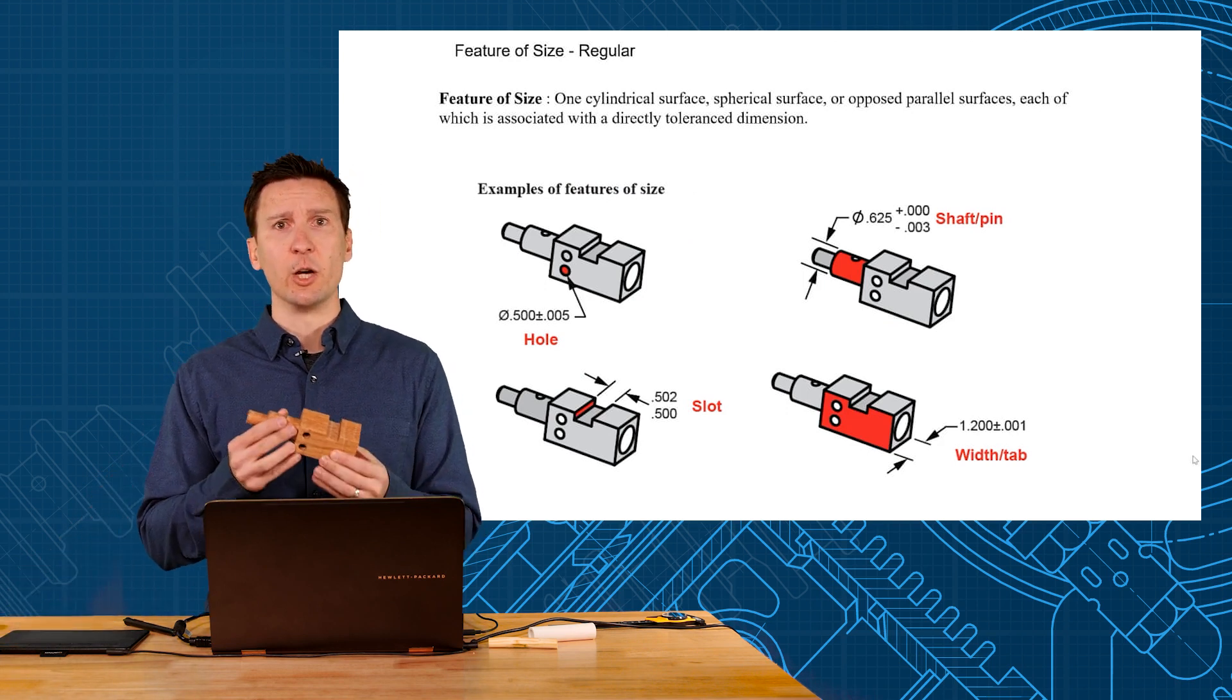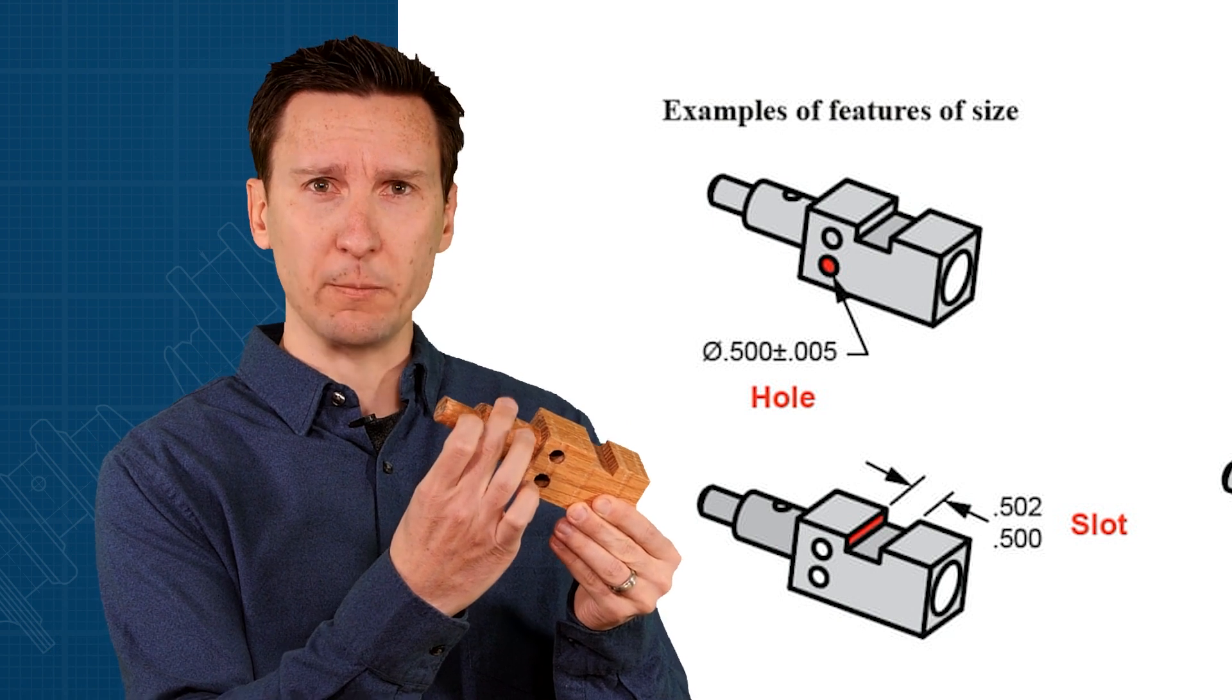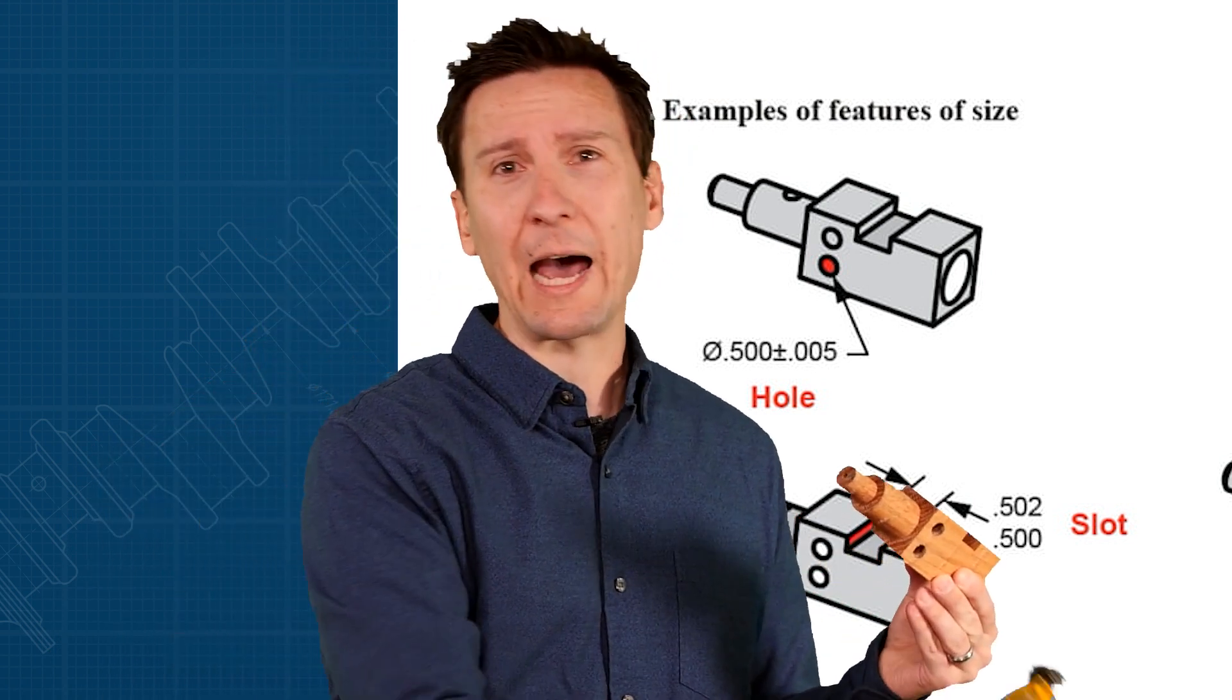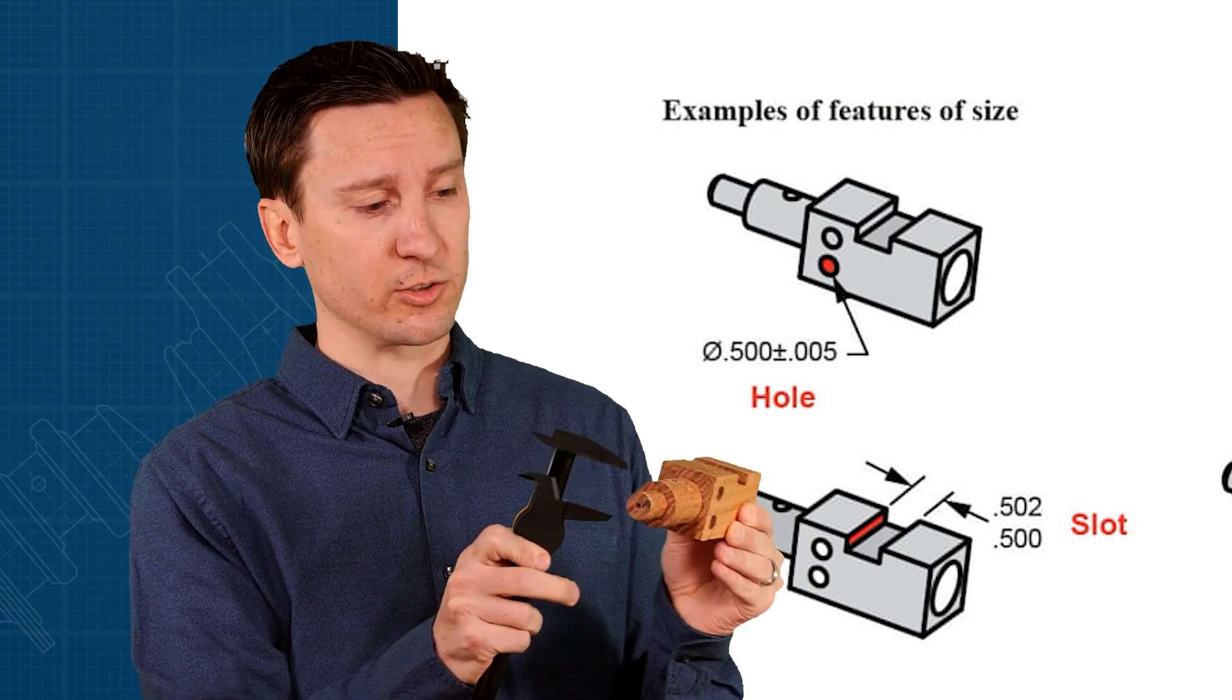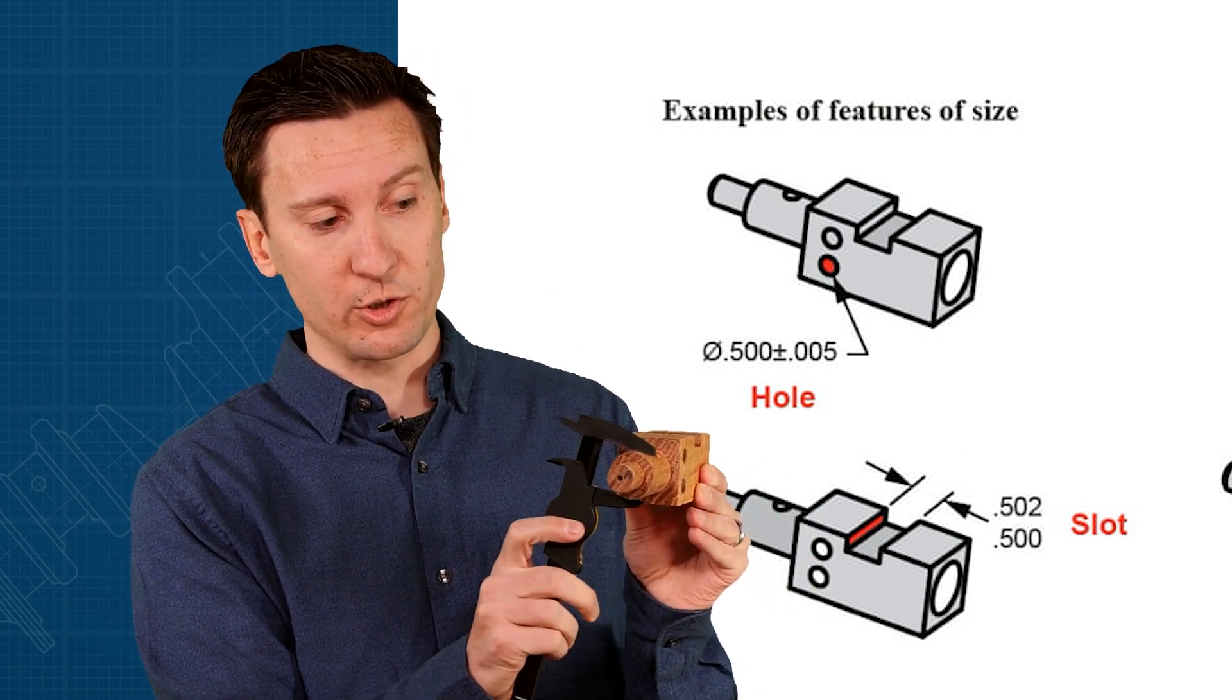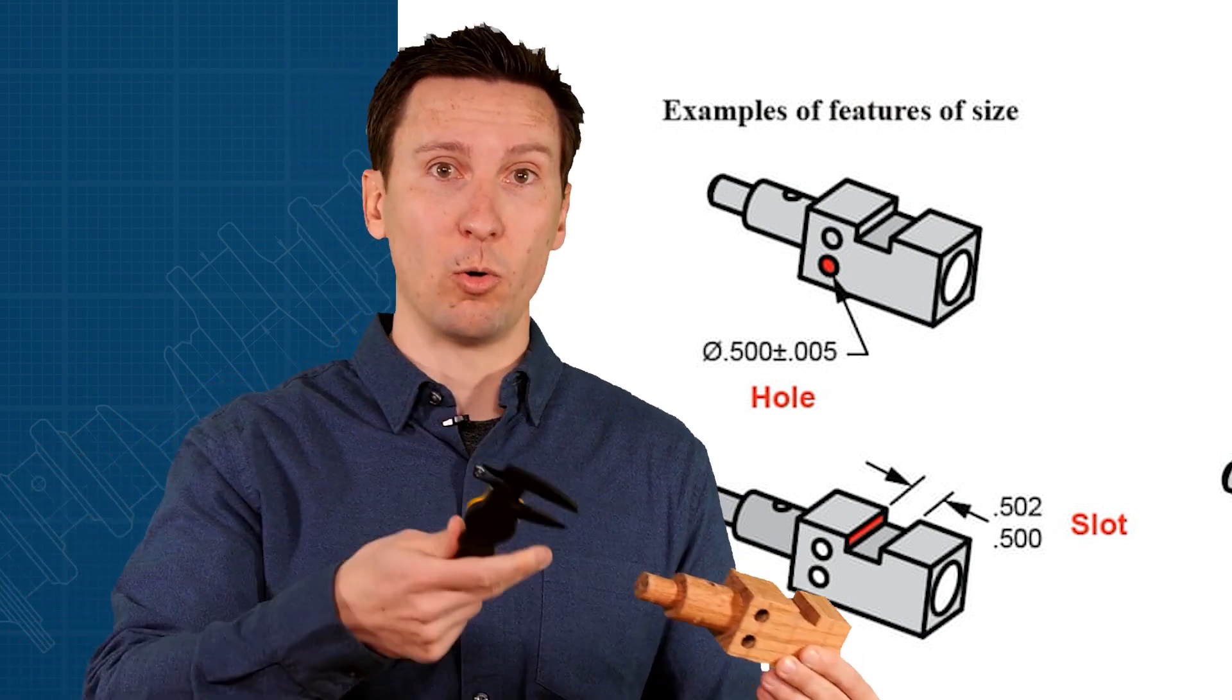What makes a feature have size? We talk about opposing points - some people call it the caliper rule. Can you measure it with calipers? Then it's a feature of size. A shaft has opposing points you can measure with calipers. A slot has opposing points you can measure with calipers. So holes, shafts, slots, and tabs are all features of size.